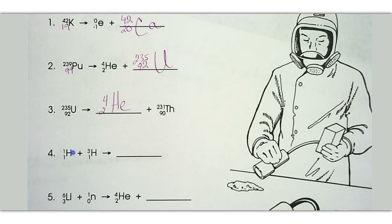Number 4, we're going to have 1 and 3 equals 4. So we're going to have 1 and 1 equals 2. So notice I added these together. And we know 4 over 2 represents helium. This is known as a fusion reaction.